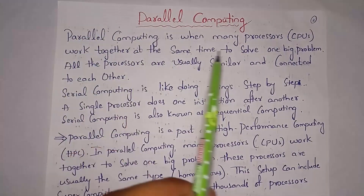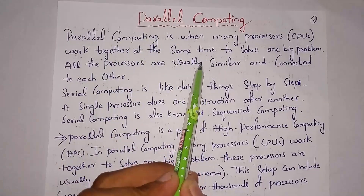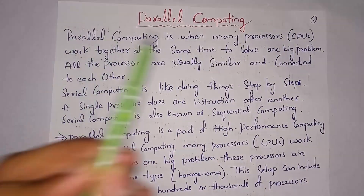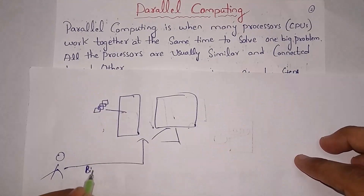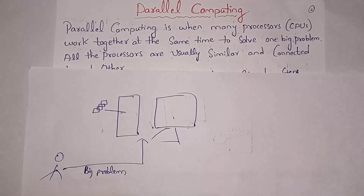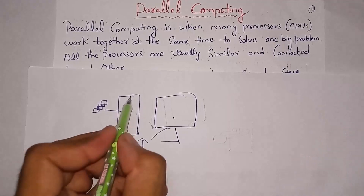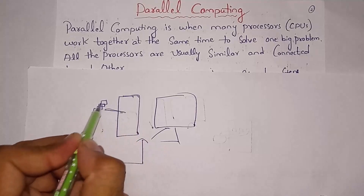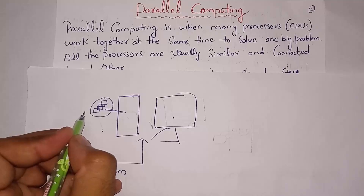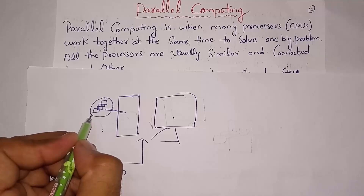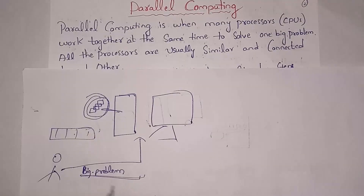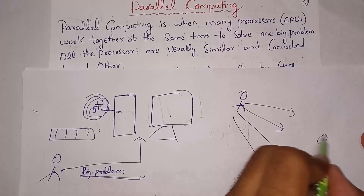Parallel computing is when multiple processors work together at the same time to solve one big problem. All the processors are usually similar and connected to each other. For example, inside a parallel computing system there are multiple processors, all of the same type, and whenever a big problem is given, it is shared among those multiple processors.